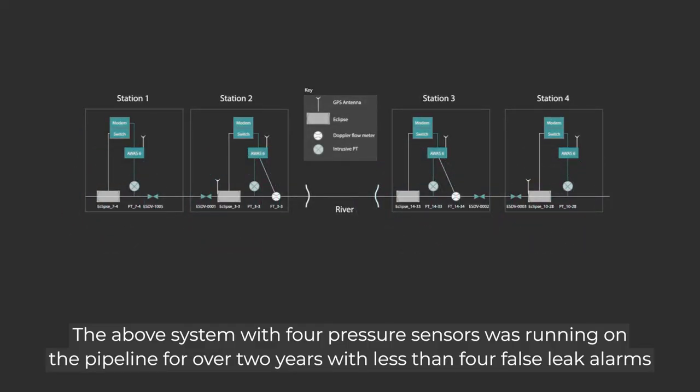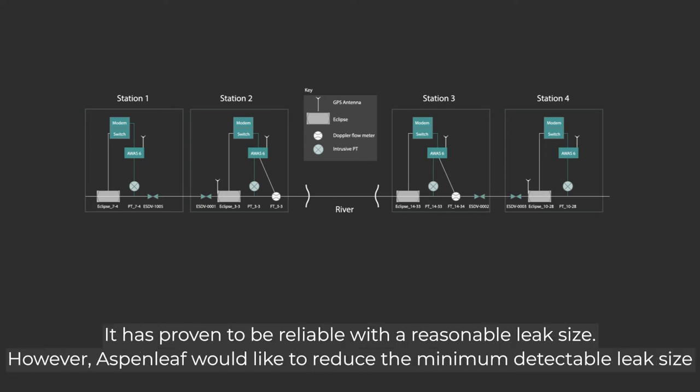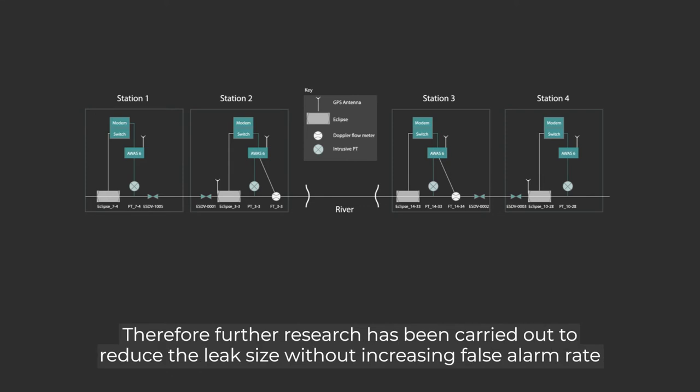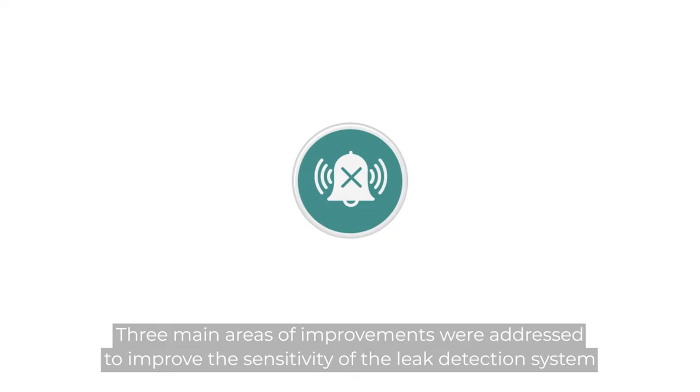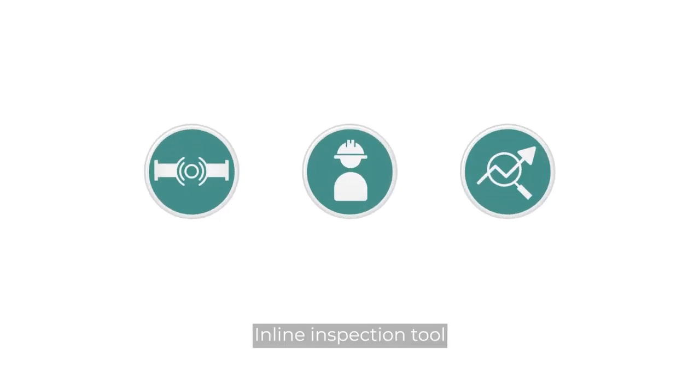The above system with four pressure sensors was running on the pipeline for over two years with less than four false leak alarms. It has proven to be reliable with a reasonable leak size. However, Aspen Leaf would like to reduce the minimum detectable leak size. Therefore, further research has been carried out to reduce the leak size without increasing false alarm rate. Three main areas of improvements were addressed: field instrumentation, pipeline operations, and in-line inspection tool.